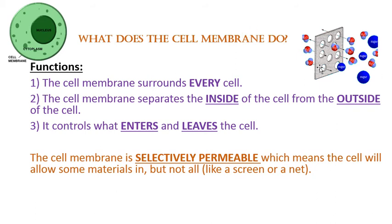If you look at the top right-hand corner, we see a picture showing water going through pretty easily on both sides, but the sugar molecules are too big to fit through those circles. So all of the sugar molecules are relegated to one side because they can't go through — that's an example of selectively permeable: some things can get through, other things cannot.